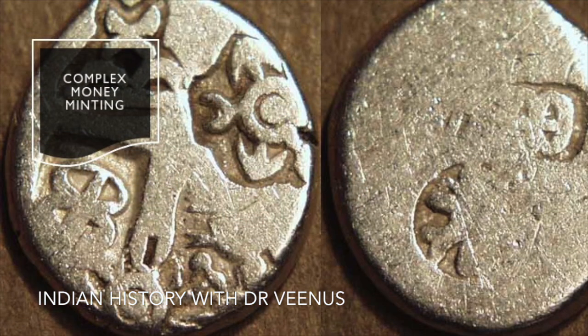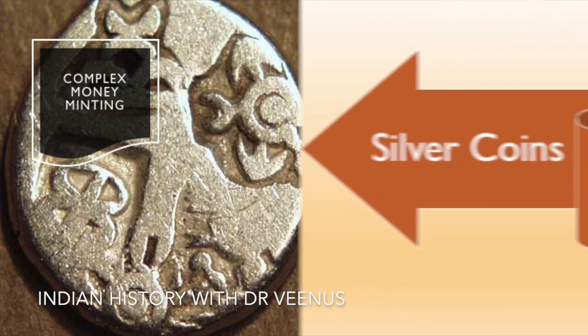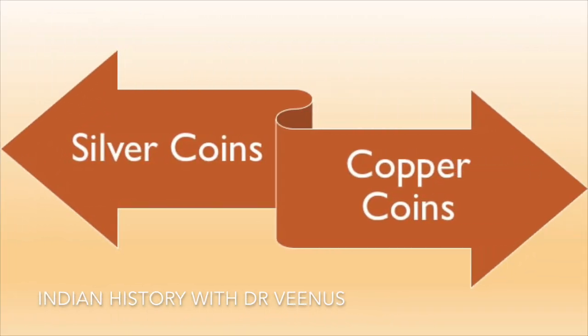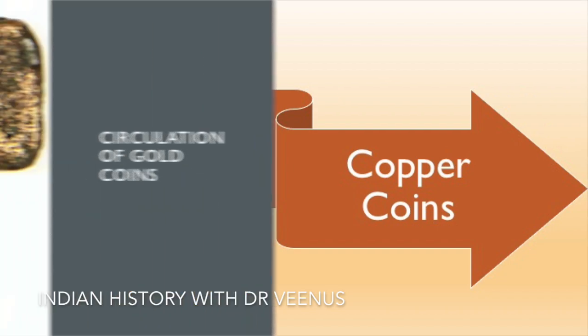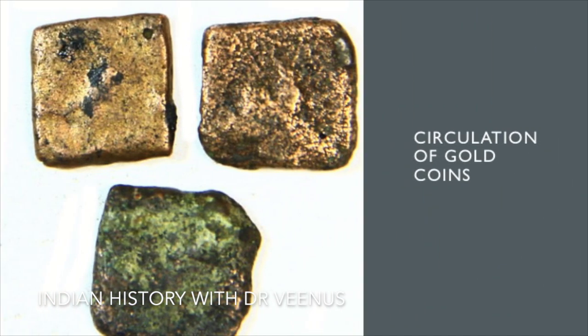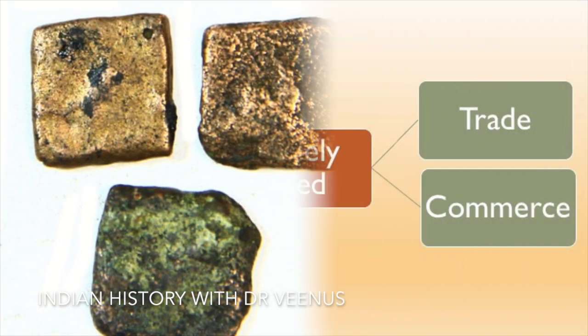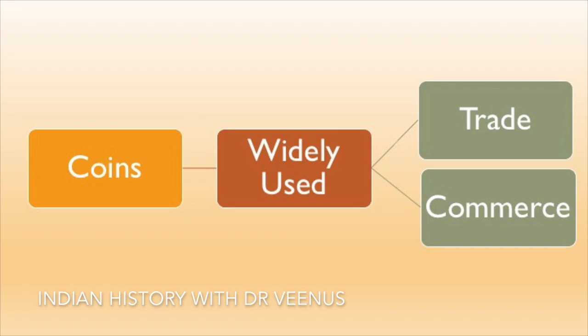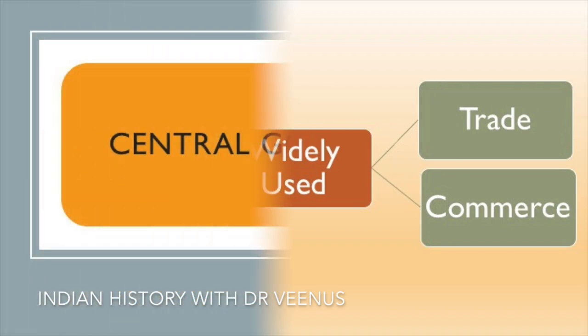The Mauryans developed a complex form of money minting. Silver and copper made up the majority of the coinage, though there were also some gold coins in circulation. The coins were widely utilised in trade and commerce.